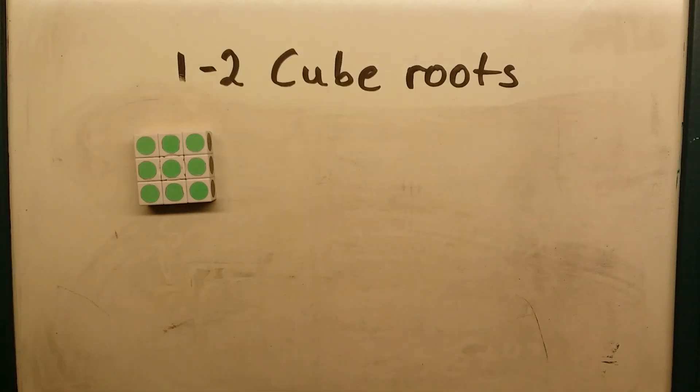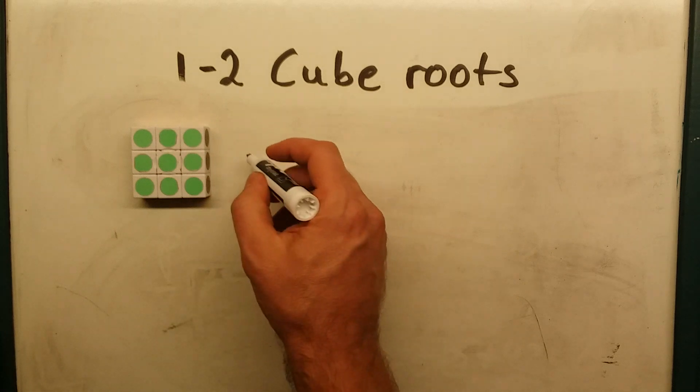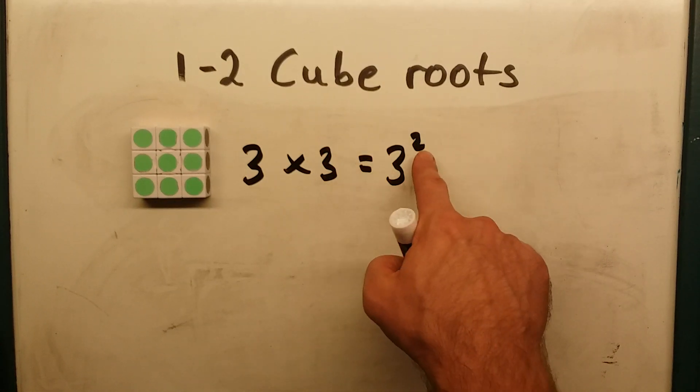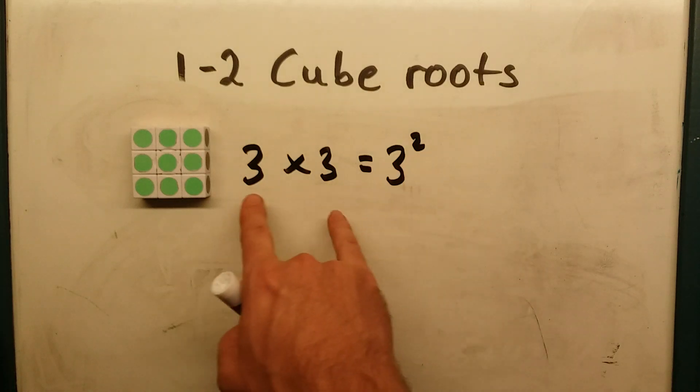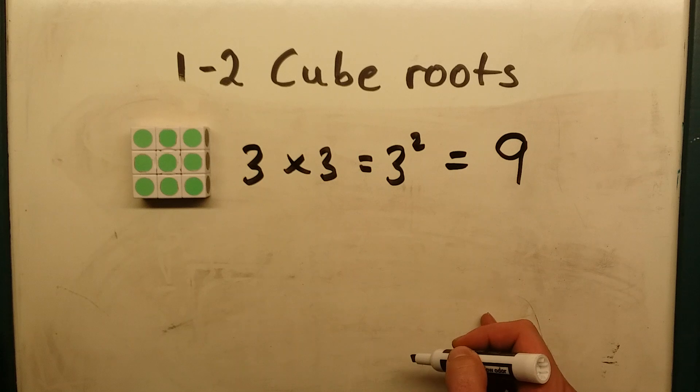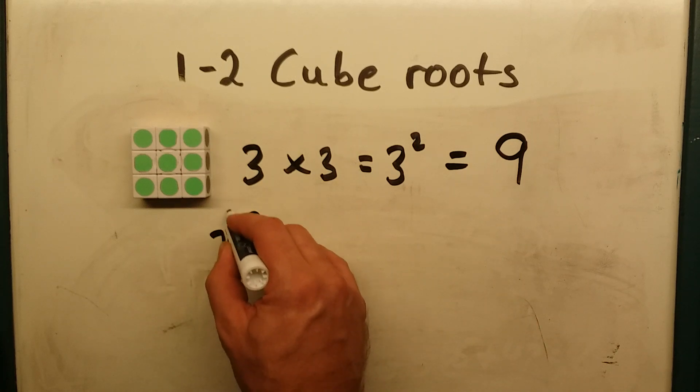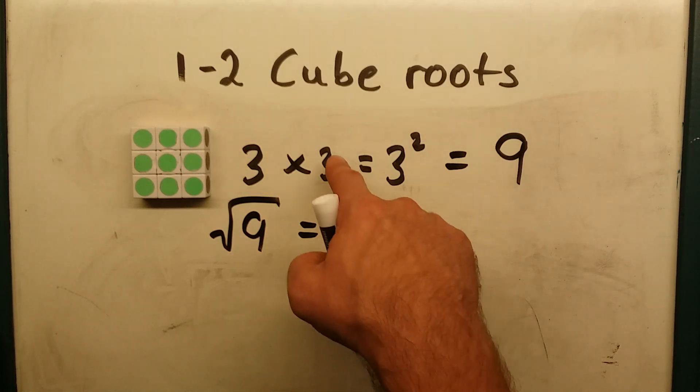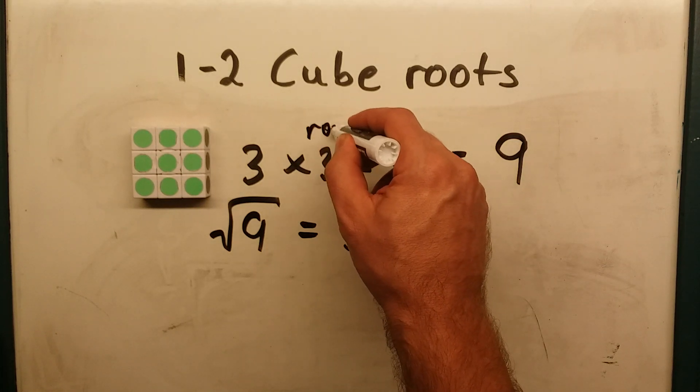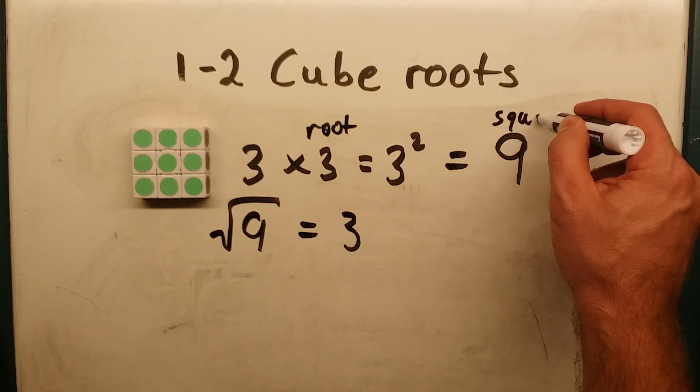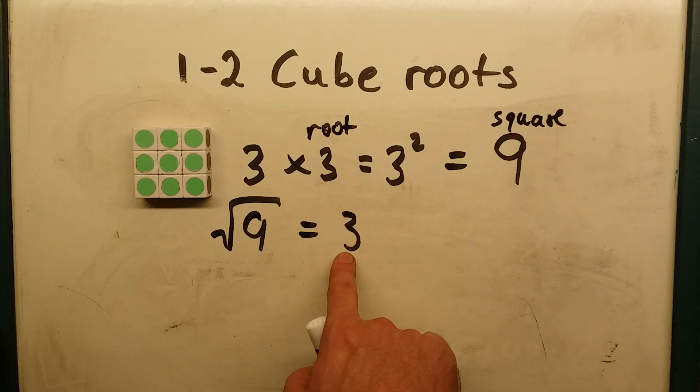Let's start with what we know. This is a square, 3 by 3. 3 times 3, we could write that 3 squared with a little 2 because there are 2 equal factors, and that gives us 9. So the square root of 9 is 3. Notice 3 is the root, 9 is the square. The square root is one of its two equal factors.